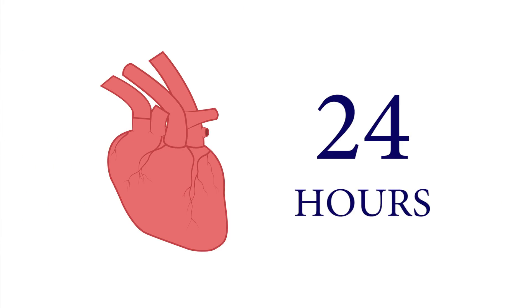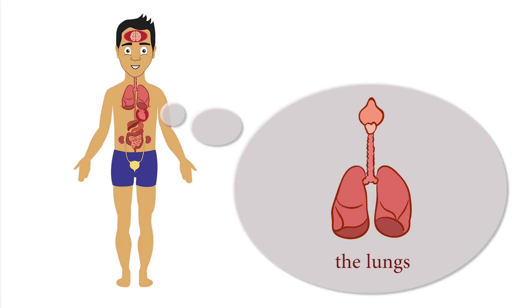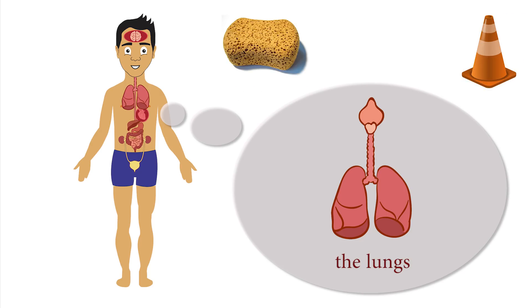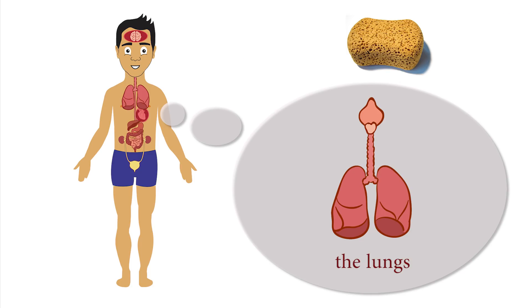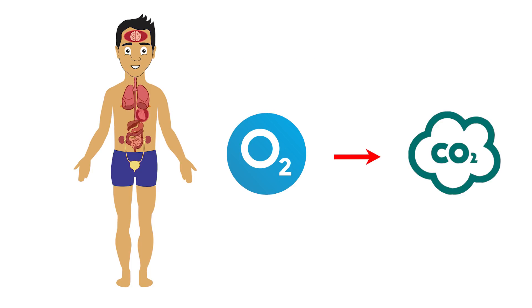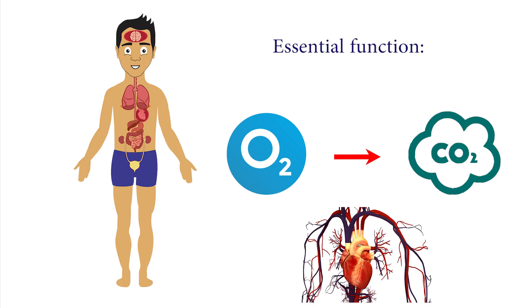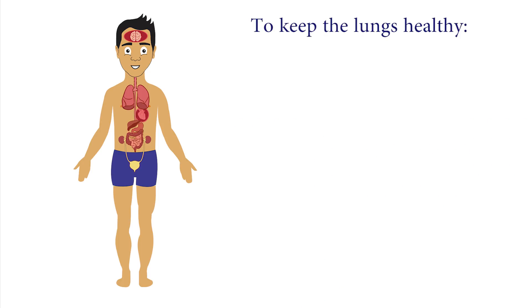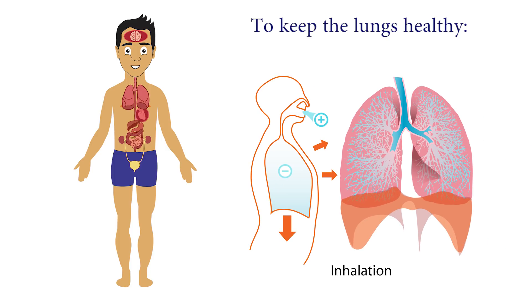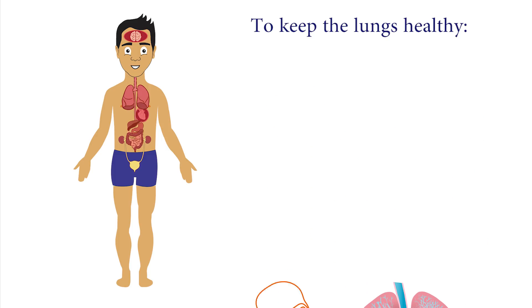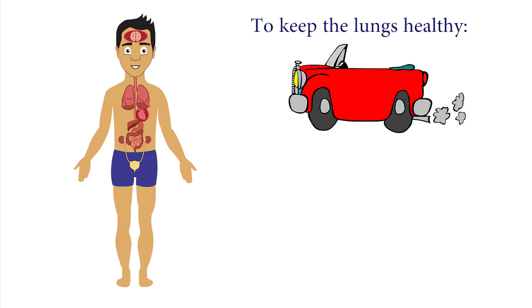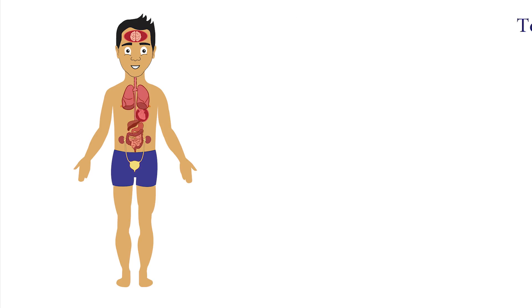Next are the lungs. The lungs are two sponge-like cone-shaped structures found in the chest cavity. Their essential function is to provide oxygen from inhaled air to the bloodstream and to exhale out carbon dioxide. To keep the lungs healthy, we must prevent inhaling toxic fumes like those from car engines and prevent smoking.